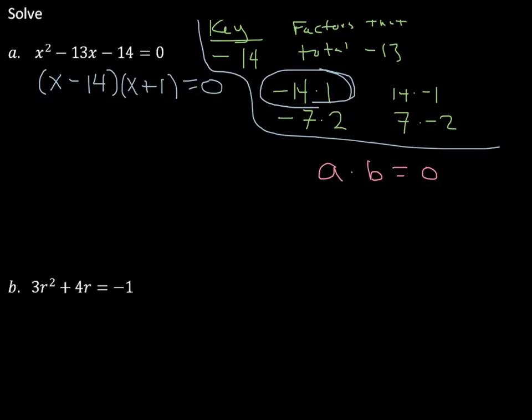Why do I care about this? Because now what I can do is I can set each of these factors equal to 0. So we can do x minus 14 equals 0 and x plus 1 equals 0. Now we're just going to solve these. Plus 14, plus 14. These cancel out and we get x is equal to 14.